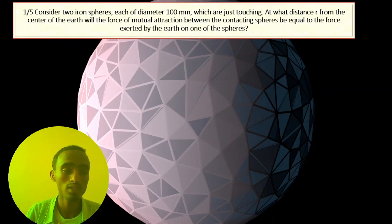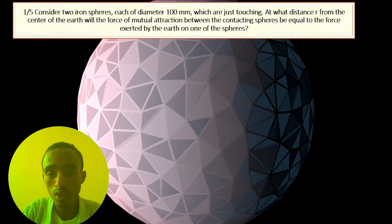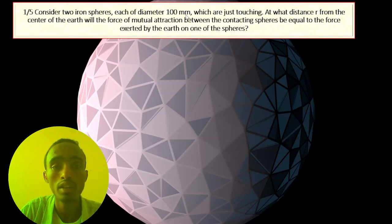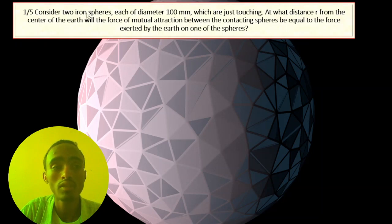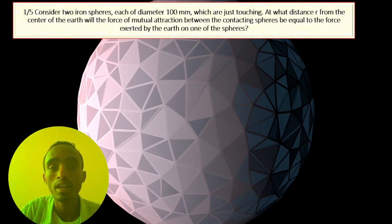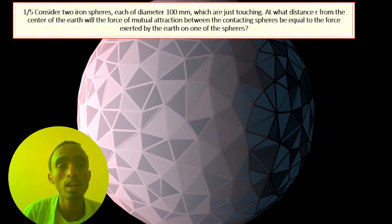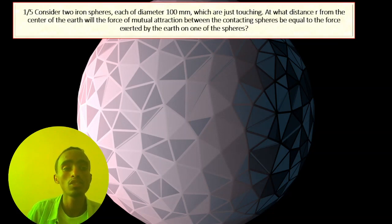Consider two iron spheres, each of diameter 100 millimeters, which are just touching. At what distance from the center of the Earth will the force of mutual attraction between the two containing spheres be equal to the force exerted by the Earth on the spheres?